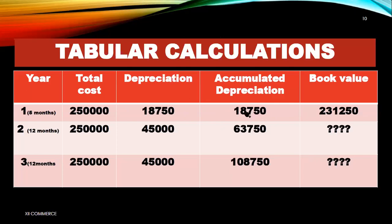Accumulated depreciation means depreciation of the previous year plus current year depreciation. The previous year is zero and the current year depreciation is 18,750, giving accumulated depreciation of 18,750. Book value is calculated as total cost minus accumulated depreciation. So the formula is TC minus AD. Applying this: 250,000 minus 18,750 gives a book value of 231,250.